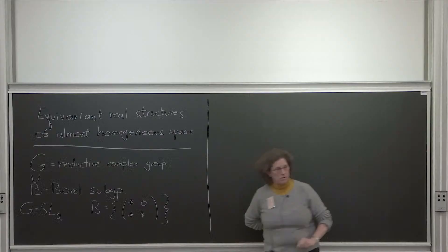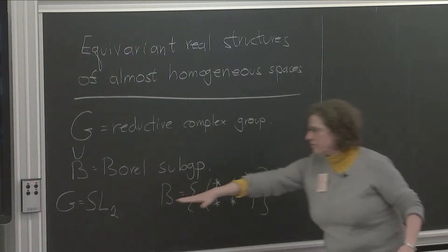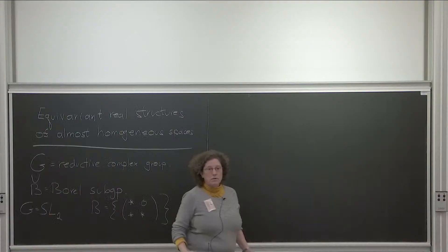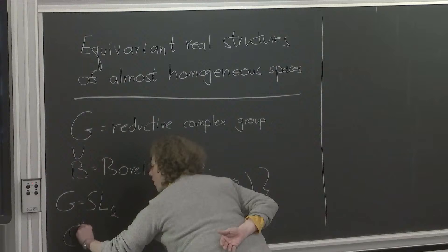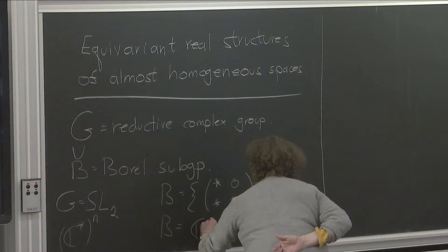And such a group always contains the Borel subgroup. If you don't know what a Borel subgroup is, it's not serious because I'm just going to give one example. The definition of a Borel subgroup is a maximal solvable connected subgroup. The case that will interest me will be G is SL2, and I will choose the lower triangular matrices. That's a typical case of a Borel subgroup of a reductive group. One can also take an algebraic torus, C-star-N, which is itself solvable. And so in that case, B is the whole group. So this is torus action.